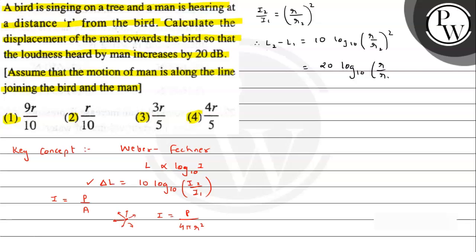Now L2 minus L1 — the change in loudness — is given as 20 decibels. So we get 20 = 20 × log base 10 of (r/r2). The 20s cancel out, giving us: 1 = log base 10 of (r/r2).